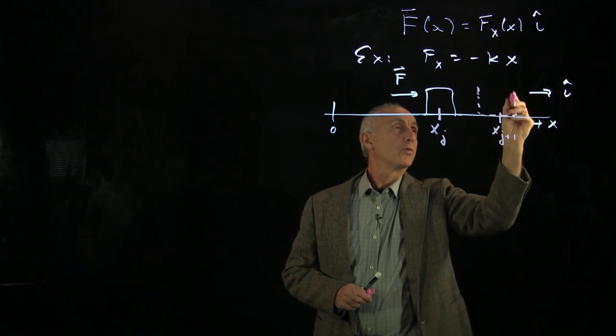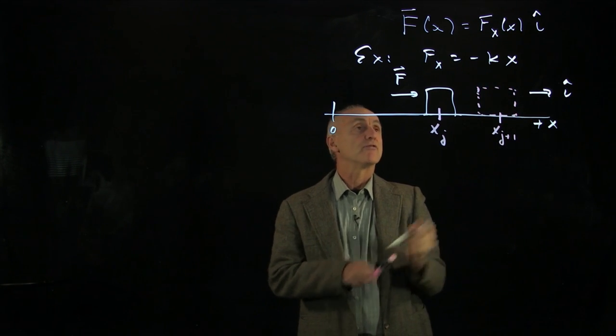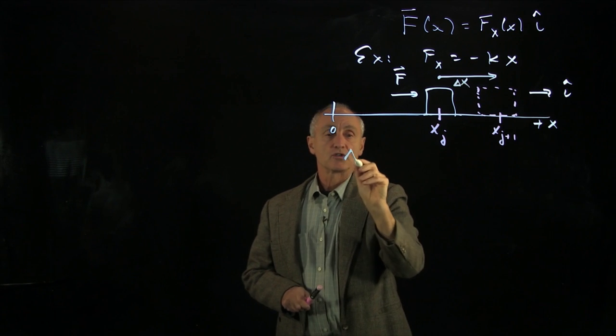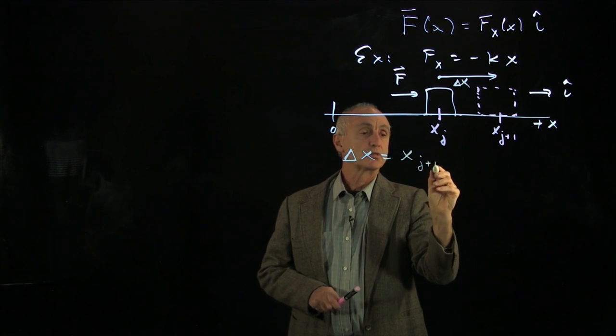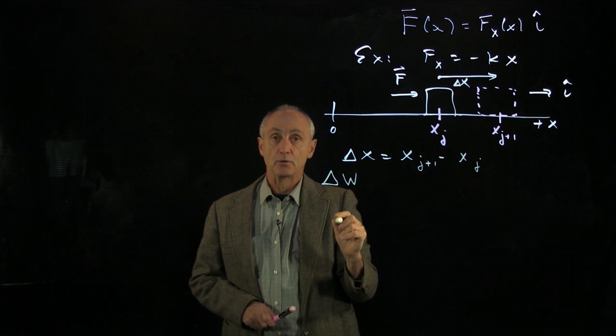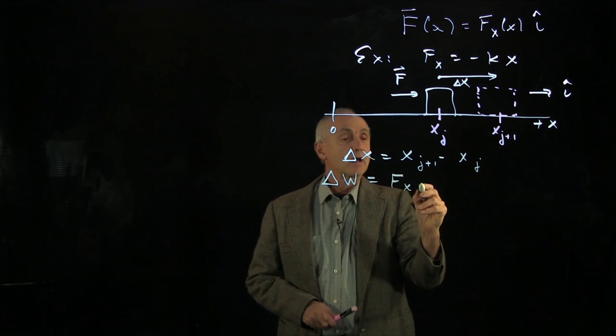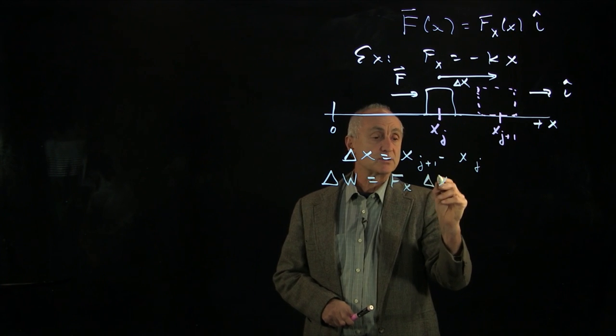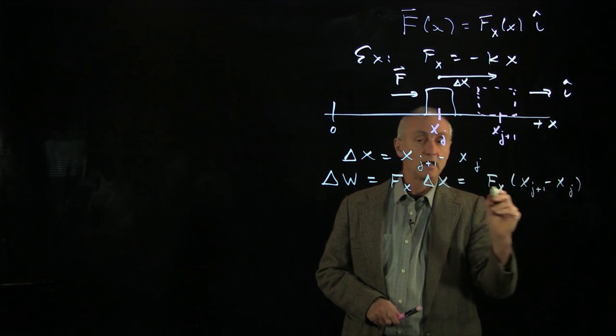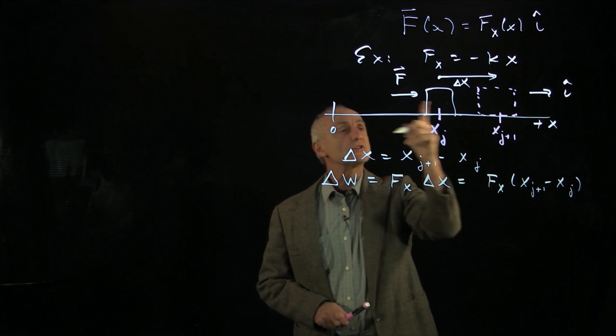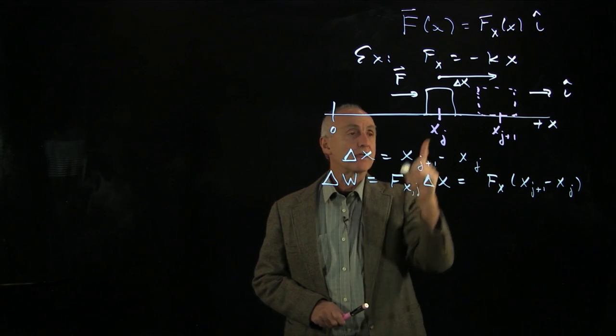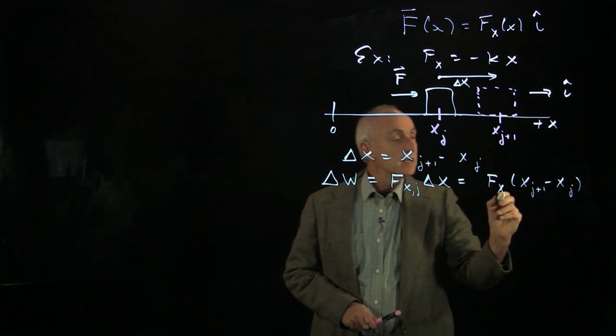We're going to ask how much work is done when the force is displaced from here to there. That's what we'll call Δx. So our displacement is a small displacement, x_{j+1} minus x_j. Our work for this small displacement, which we indicate with a delta, is equal to the force, which is a function of x, times this displacement. So we get F(x) times (x_{j+1} - x_j). Because the force is varying, we're looking at just this displacement. Let's refer to this force as the j-th part.